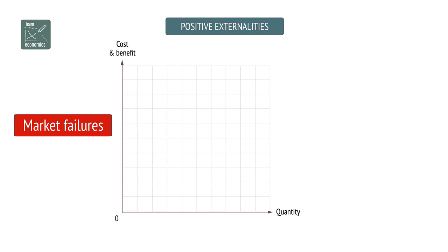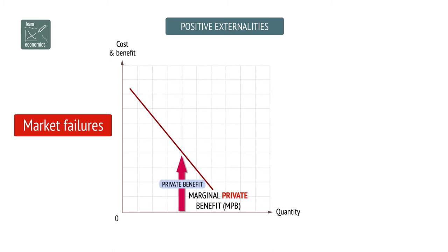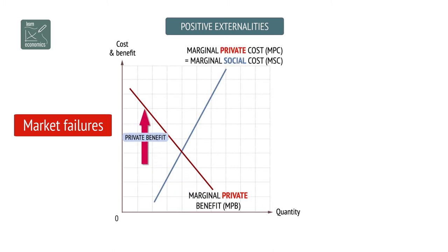Externalities can arise from consumption or production and may be positive or negative. An external benefit from consumption is the benefit that third parties gain from the consumption of others, but where they do not pay for the benefit. For example, if your neighbour buys a car and a few days later gives you a lift to the train station, you have benefited from their consumption without paying.